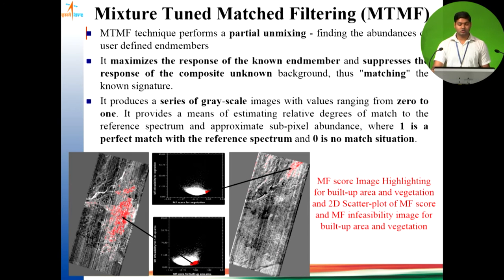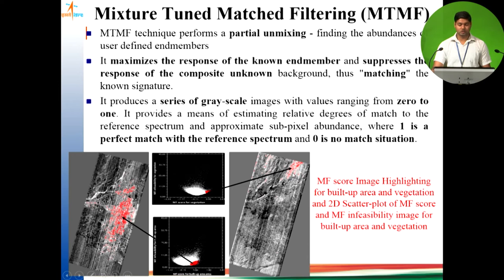Mixture tuned matched filtering (MTMF) performs partial unmixing. It gives the abundances of user-defined end members, highlighting those end members while suppressing others. Two types of output are generated: a score image and an infeasibility image. If a false classification occurs — for example, dry riverbed being highlighted when classifying urban area — the infeasibility value will be very low, differentiating the false classification. A high score combined with very low infeasibility indicates a correctly classified feature.